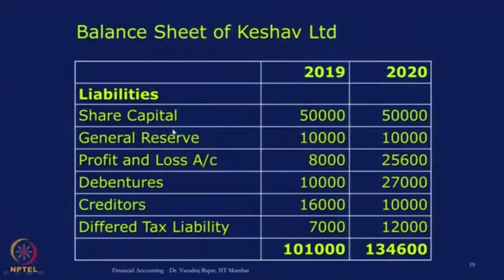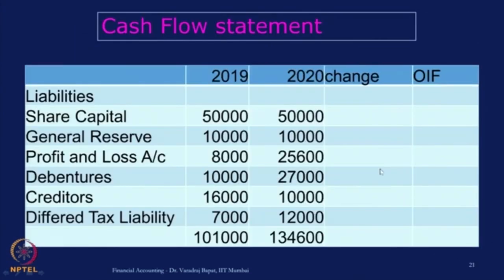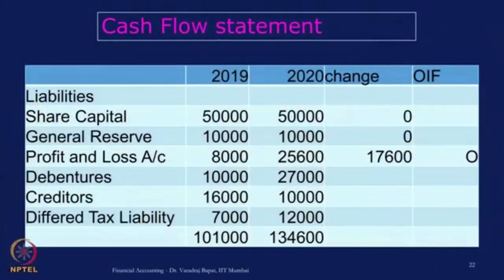Let us start with share capital — there is no movement. General reserve — again no movement. For profit and loss account, we do see an increase from 8,000 to 25,600. This change is most likely to have some impact on cash flow. Normally make 5 columns: item, two years' figures, change, and O/I/F. The change in the profit and loss account is due to profit accumulated during the year and it is mainly an operating-related item, so we have marked it as O.